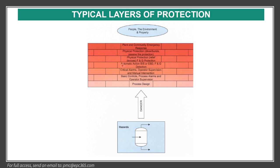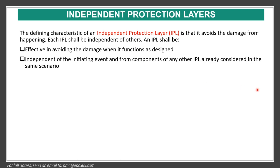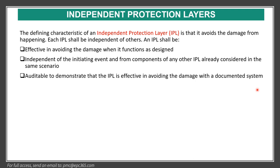If all these barriers fail, there is an effect on people, the environment, and property. We must understand the layers of protection. An independent protection layer, or IPL, must be effective in avoiding damage when functioning as designed. It should be independent of the initiating events and independent of components of any other IPL already considered in the same scenario. It should be auditable — able to demonstrate that the IPL is effective in avoiding damage with a documented system.